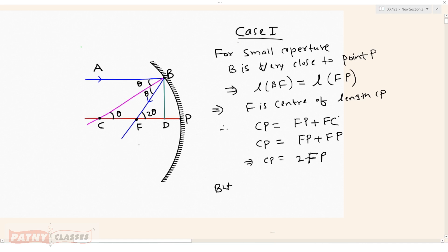R upon 2, FP is nothing but focal length F, and CP is nothing but R. This implies F equals R upon 2. So by using physical distances we can easily prove F equals R upon 2.